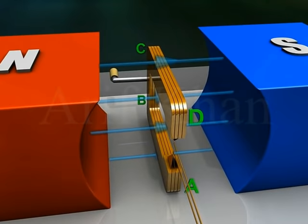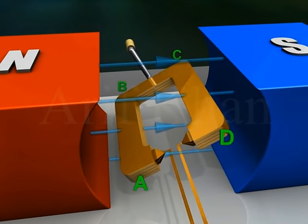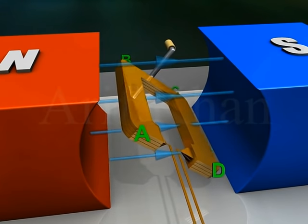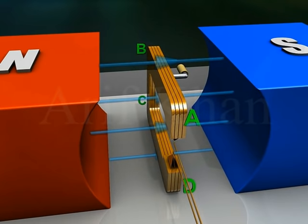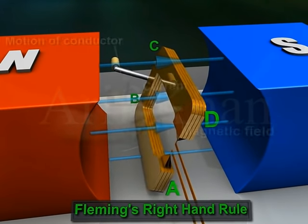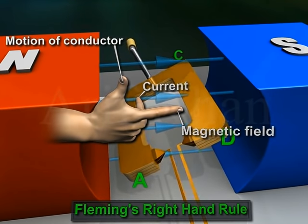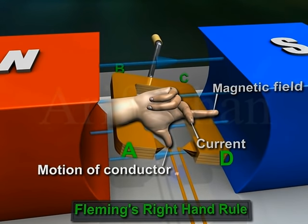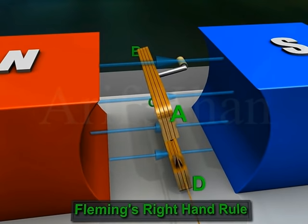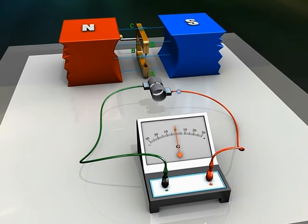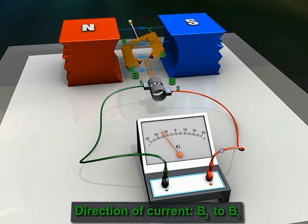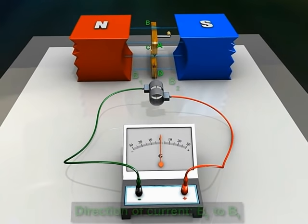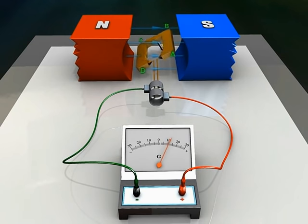During the next half rotation, arm AB moves up while arm CD moves down. By Fleming's right-hand rule, current flows in the direction ABCD, that is from B2 to B1 through the galvanometer. Thus, the induced current changes its direction every half rotation.